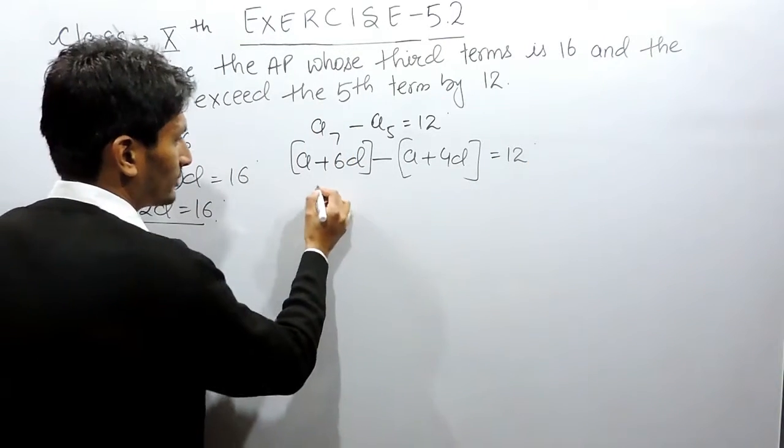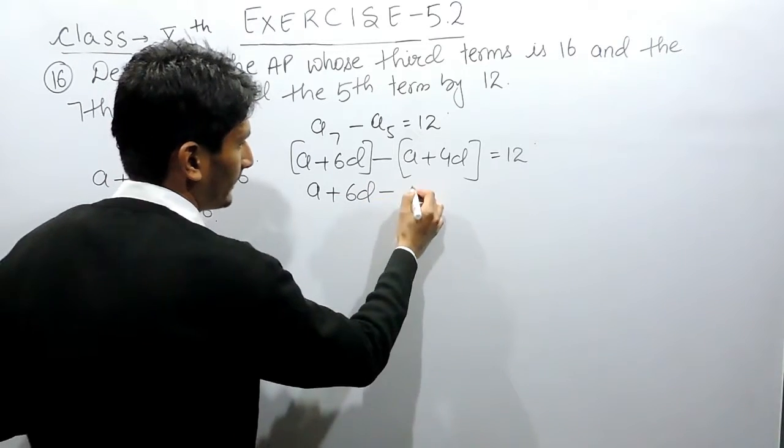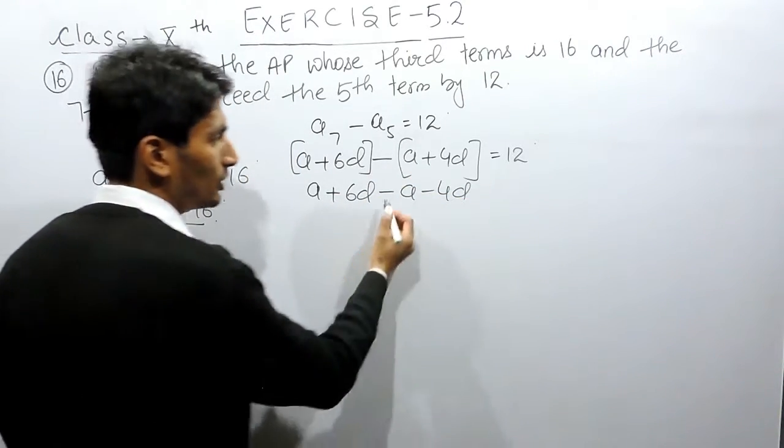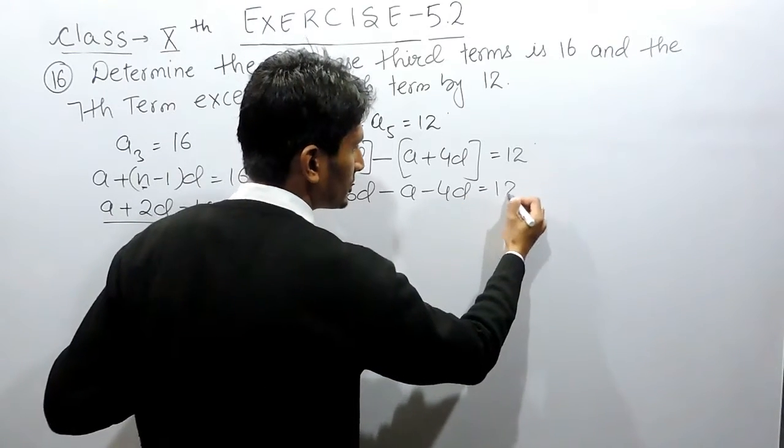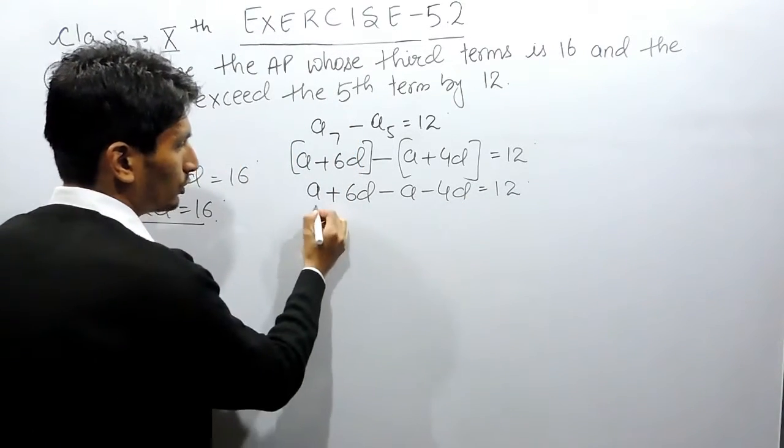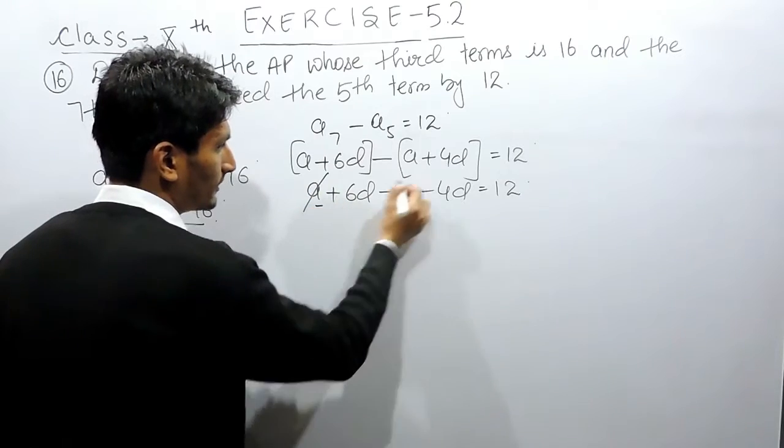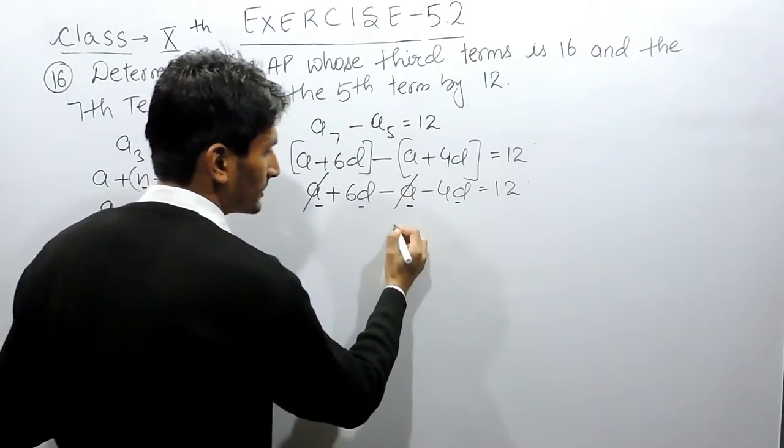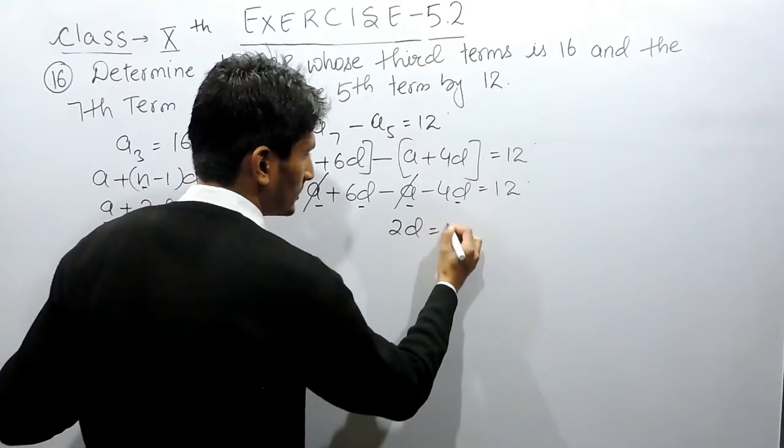So if I solve this: A plus 6D and minus A minus 4D, because there is a negative sign outside the bracket, so both signs should be changed inside the bracket. A plus minus can be cancelled out. These two are like terms, so 6 minus 4 is 2D equals 12.